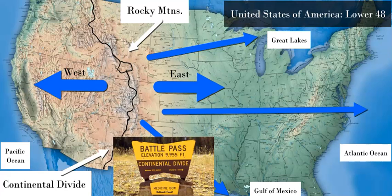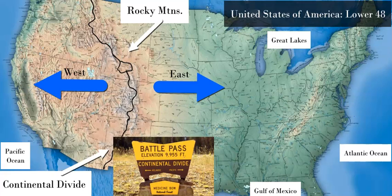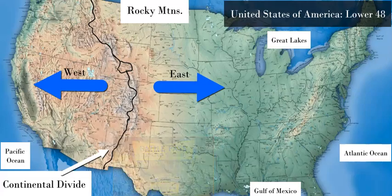So this divide across the Rocky Mountains divides which direction the water is going to flow — either towards the west and the Pacific, or towards the east, the Atlantic, or the Gulf of Mexico.